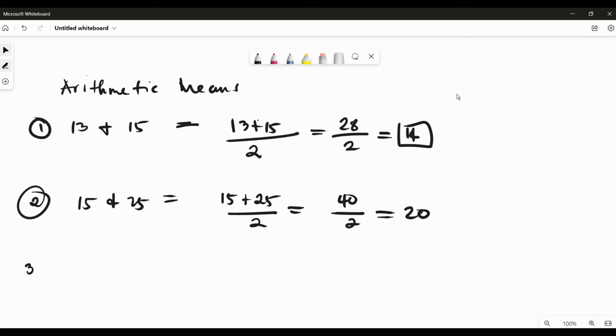So what if we have a fraction, let's say 1 half and 3 eighths. So we're going to add 1 half plus 3 eighths divided by 2.